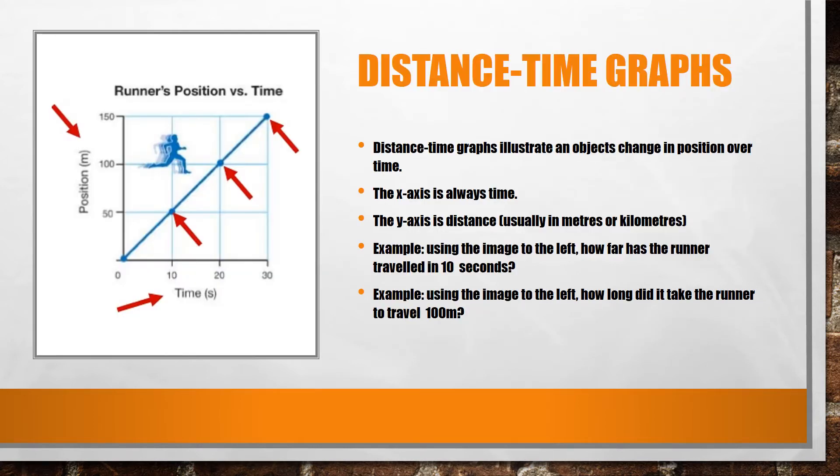To the left is an example of a distance-time graph. It is used to illustrate an object's change in position over time. Time can be found on the x-axis, while the y-axis shows us distance. If we wanted to figure out how far a runner traveled in 10 seconds, we could use the distance-time graph by finding 10 seconds on our x-axis, following the grid lines up to the runner's path, and following across to our y-axis. We can see from this that in 10 seconds, the runner was able to travel 50 meters.